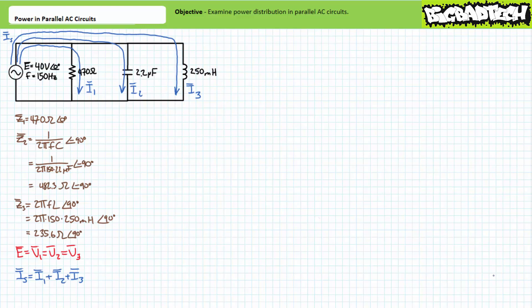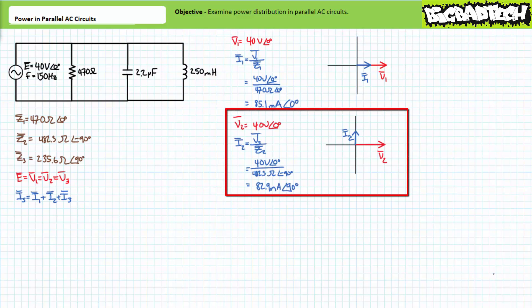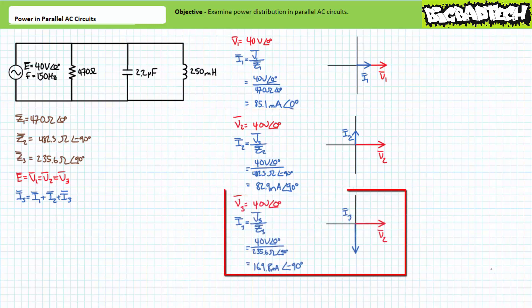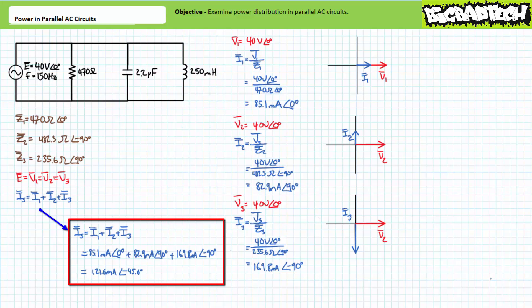There are several ways to obtain the desired figures. The easiest and most direct means is through Ohm's law, followed by a subsequent Kirchhoff's current law analysis. Ohm's law suggests the current through impedance Z1 equals 85.1 milliamperes at an angle of zero degrees; the phasor diagram illustrates voltage and current are in phase for this purely resistive element. A second iteration gives current through Z2 equals 82.9 milliamperes at an angle of 90 degrees, with current leading voltage by 90 degrees for this purely capacitive element. A third iteration gives current through Z3 equals 169.8 milliamperes at an angle of negative 90 degrees, with current lagging voltage by 90 degrees for this purely inductive element. Application of Kirchhoff's current law demonstrates source current equals 121.6 milliamperes at an angle of negative 45.6 degrees.